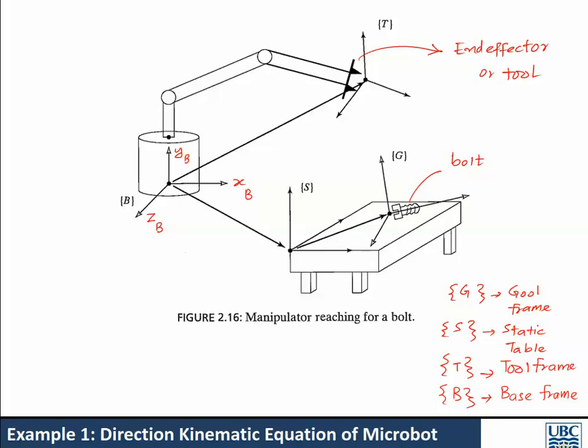Similarly, the tool frame has axes X_T, Y_T, and Z_T. What we need to do is locate frame G — find the translation and orientation of the bolt relative to the corner of the table where frame S has been placed. That is given by a transformation matrix T of the gold frame relative to the static frame.